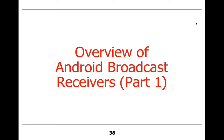The last Android component we're going to talk about is broadcast receivers. At this point we've covered activities, which are user-facing components. We've talked about services, which are background components. We've talked about content providers, which are used to store information, often persistently. And now we're going to talk about broadcast receivers.